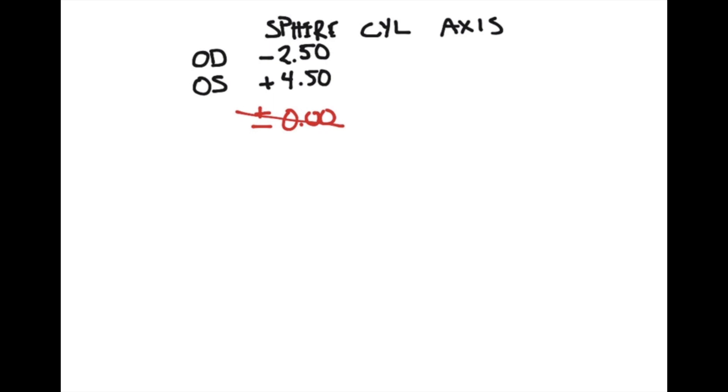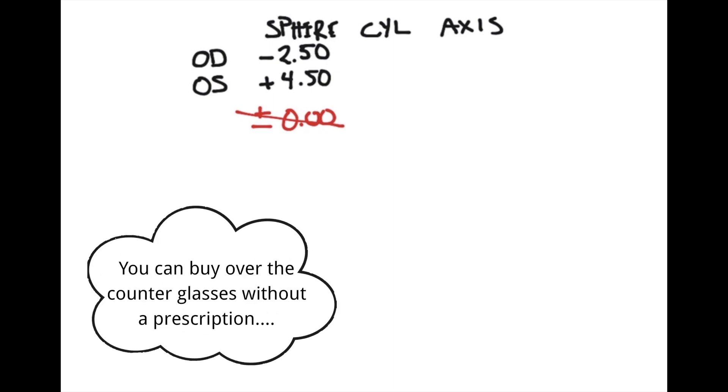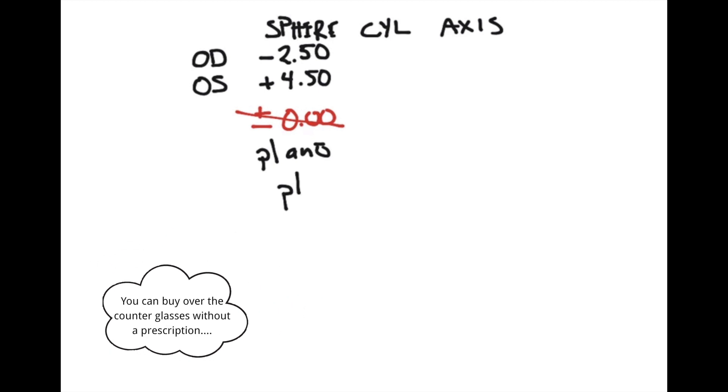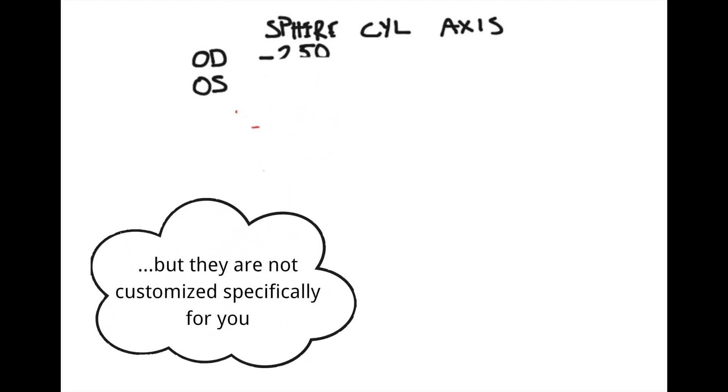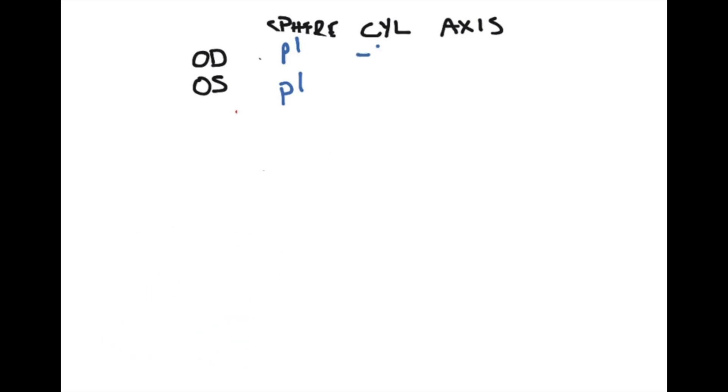So as optometrists we typically don't do that. Rather than writing that the value of the sphere is zero, we will write plano, referring to a plane lens or a zero power lens. Sometimes that is shortened to PL. So in this situation, if rather than the value being some other value for the sphere, you would be writing PL, and if they have some type of cylinder then you would write that value in. So let's say it's minus 1.00 at axis 180 and then let's say this one's plano at minus 0.75 axis 90. What that tells us is that the plano value is zero for the sphere.